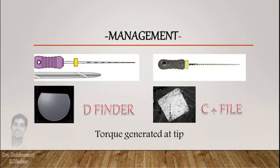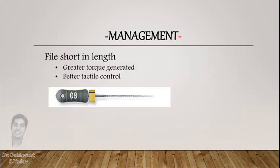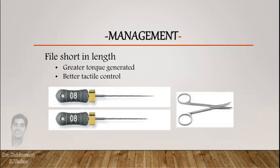So we need a small-numbered file that will not easily bend and generates a lot of torque at the tip. D-finder and C-plus files both fit these criteria very well, so you can use one of them. A file shorter in length is more effective in generating torque and gives better tactile control. A 21mm size 8 K-file is a good tool to negotiate ledges and blocked canals. Sometimes, if a ledge is very notorious, I cut the tip of a size 6 or 8 file by around 1–2mm for better tactile control.